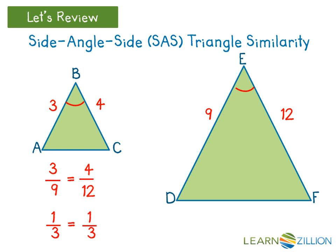The included angles are the angles between the sides we use for the proportion. So if angle B is congruent to angle E, we can prove that the triangles are similar. This means that triangle ABC is similar to triangle DEF. This also means that the corresponding sides between the two triangles are proportional, and that the corresponding angles between the two triangles are congruent.